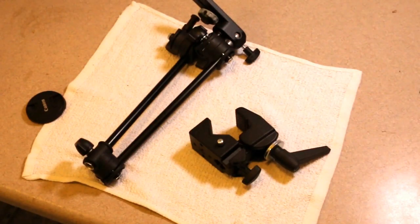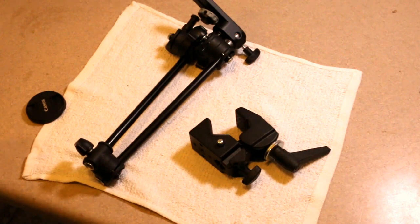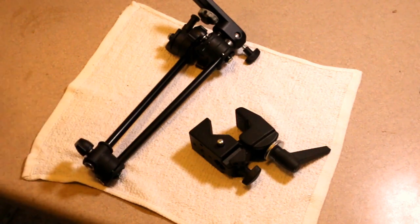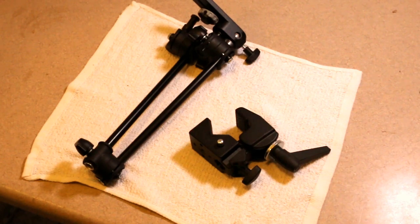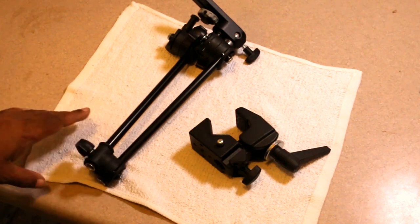Alright guys, I'm going to give you a quick look at a piece of equipment I've had for a while and I've been looking for an opportunity to show you. This is the Manfrotto 196B-2 143BKT two-section articulated arm, so let's just call it an articulated arm by Manfrotto.